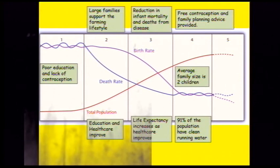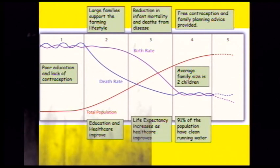In stage two, we have a really high birth rate because we want children to support on the farm. We also want children to look after us in old age, and healthcare and education are improving, which starts to decrease the death rate. With the death rate decreasing, more people are going to be living, so the total population starts to rise.